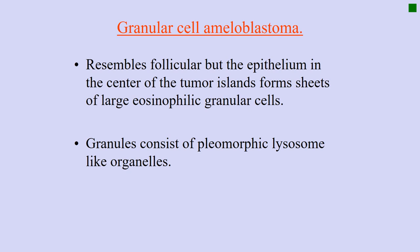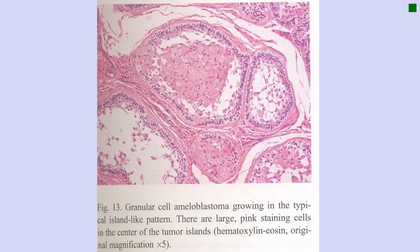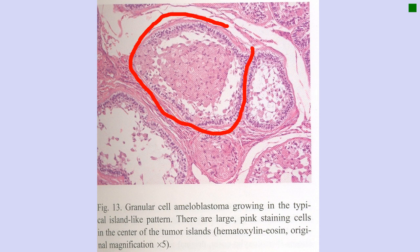The fourth type is granular cell ameloblastoma. Again, it resembles the follicular pattern, but the epithelium in the center of the tumor island forms sheets of large eosinophilic granular cells. The granules basically consist of pleomorphic lysosome-like organelles. This is the whole follicle, and you can clearly see the tall columnar ameloblast-like cells.